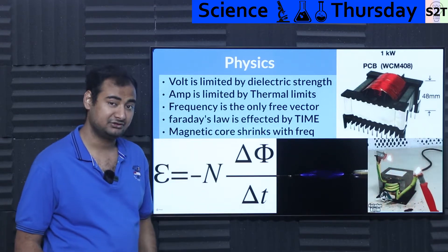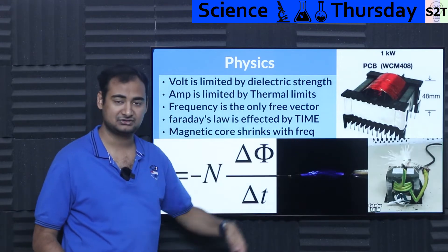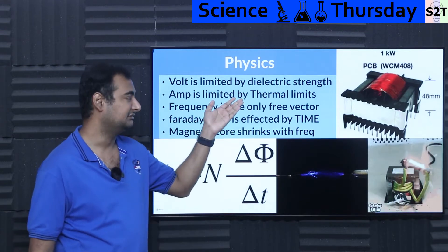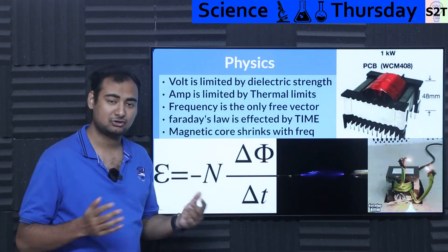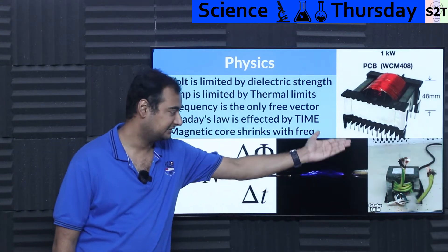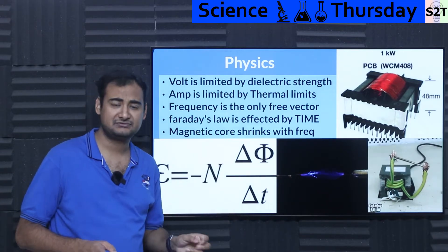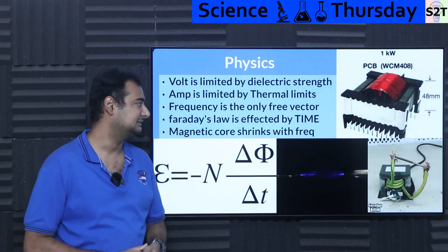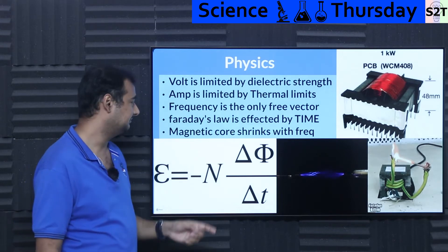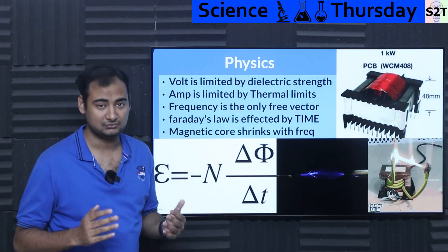You can't increase the voltage, but what if you increase the amps? Power output is voltage multiplied by amps. Well, unless you're using a superconductor, you're dealing with thermal limits of any conductor — be it copper, even 99.999999% pure copper. It's going to melt. So that limits both vectors: you cannot increase voltage nor current. But in an AC system, frequency is a free factor — meaning you can increase or decrease it as much as you want.